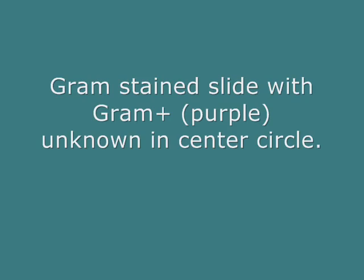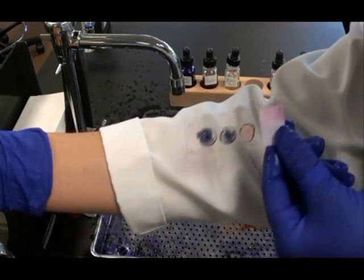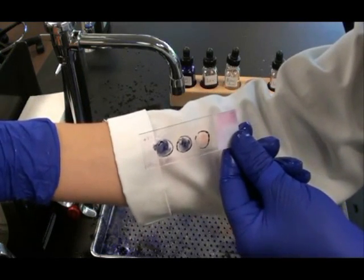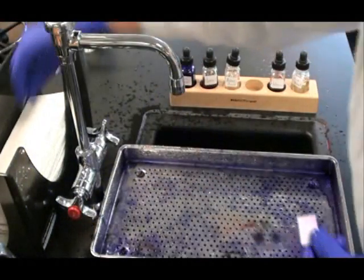I'd also like to show you an example of another slide that I prepared with a Gram positive unknown. You see my positive control on the left. My negative control on the right. And this unknown is purple like the positive control.